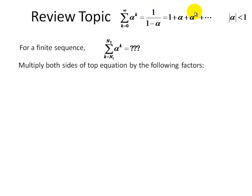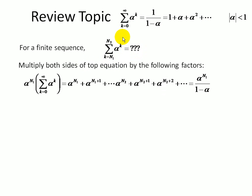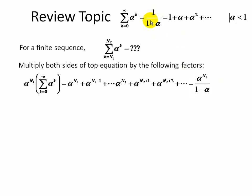We're going to use the infinite series formula to generate the finite sum. First, we multiply both sides of the equation by alpha raised to the n1 power. When we do that, the first term (which was 1) becomes alpha to the n1, and each subsequent term is also multiplied by alpha to the n1. This yields the expression: alpha to the n1 divided by 1 minus alpha, equal to the series starting at alpha to the n1.